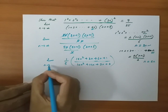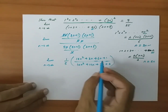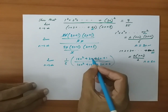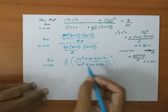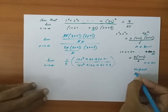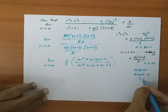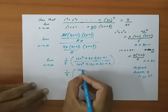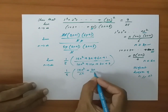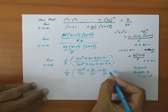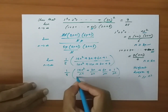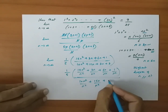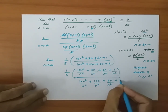Now, limit n approaches infinity. What we are going to do is take the highest degree, meaning the highest power of n. Here the power of n is 1, but the highest power is n squared. So I will divide everything by n squared. I will write 1 by 5 into: 18n squared by n squared plus 3n by n squared plus 6n by n squared plus 1 by n squared, all divided by 10n squared by n squared plus 15n by n squared plus 2n by n squared plus 3 by n squared.